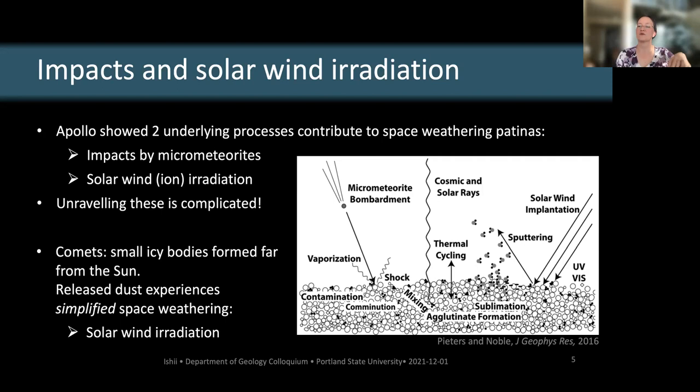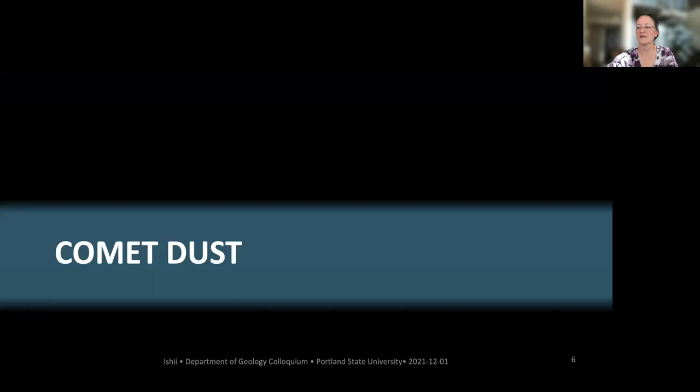Comets are small icy bodies that formed far from the sun and stayed frozen until they enter an orbit that takes them near it. When their dust is released, it hasn't experienced aqueous processing at all, so it's essentially only getting the solar wind irradiation portion of space weathering processes. It's a simplified form of space weathering.